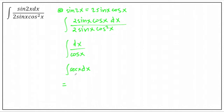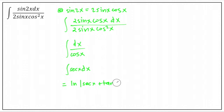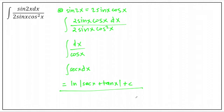Referring to the formula for integration of trigonometric functions, the integral of sec(x) dx is equivalent to ln of |sec(x) plus tan(x)| plus c. So that is the answer for the integral of sin(2x) dx over 2 sin(x) cos²(x).